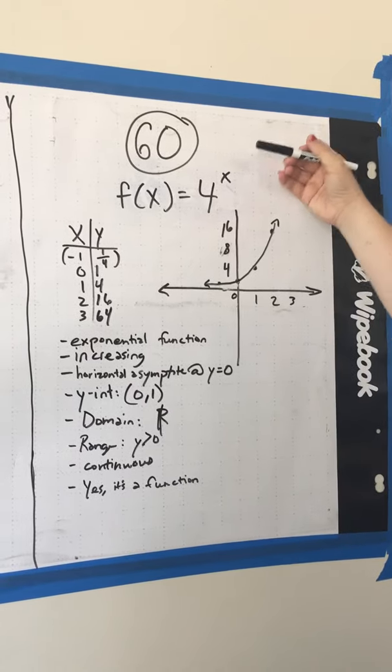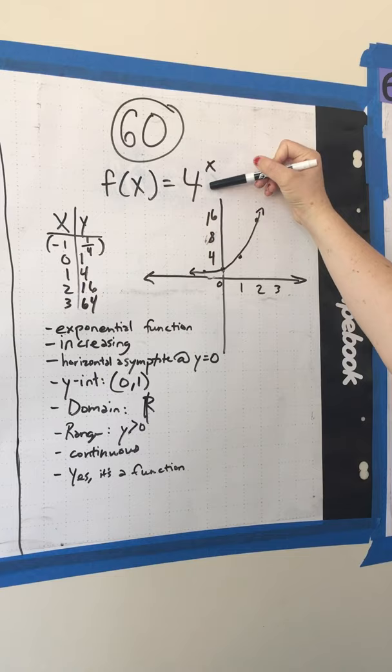Alright, here's how to do problem 60 from the math homework. We have f(x) equals 4 to the power of x, and we have to graph it and completely describe it.